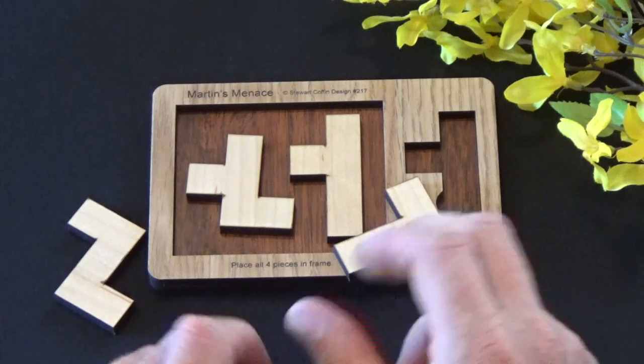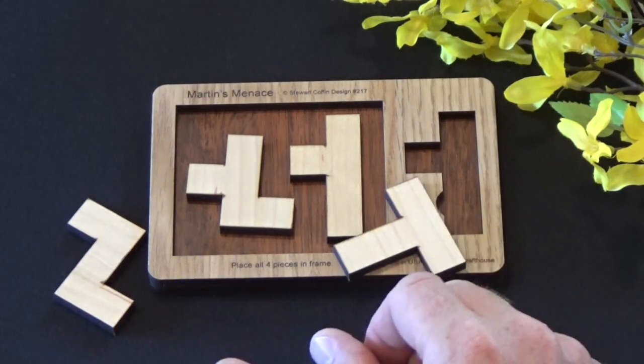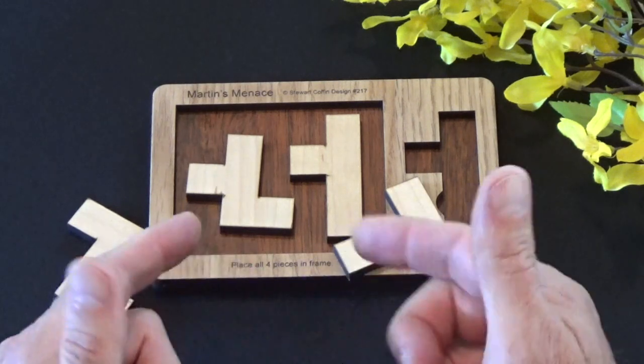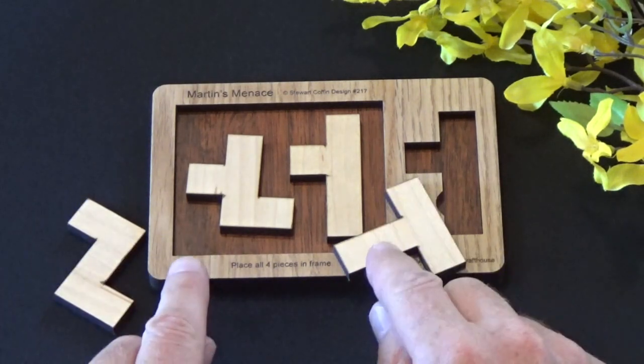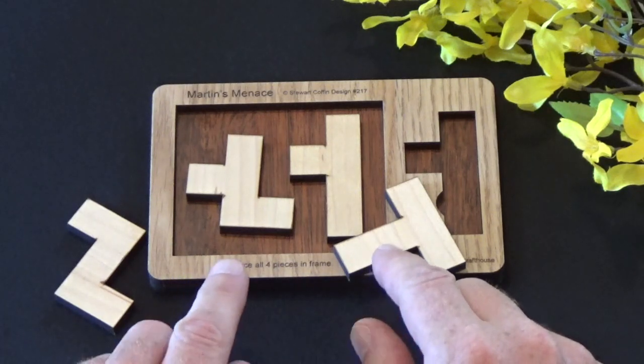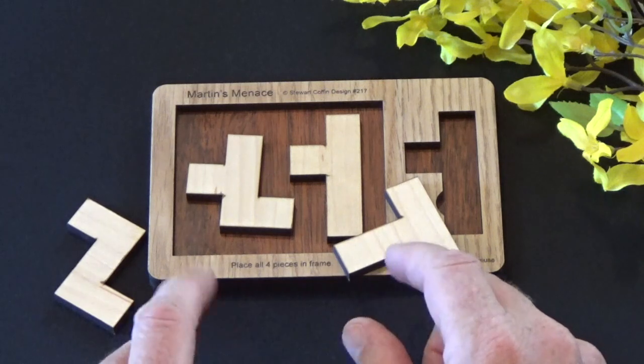It is Stuart's design number 217 and he named this puzzle Martin's Menace because this puzzle confounded the famous, legendary now, Martin Gardner.